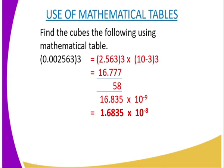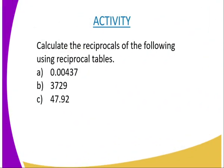And because 10¹, 1 is positive, and there is 10⁻⁹, you add the powers. So positive 1 plus minus 9, you will get negative 8. And therefore, the answer becomes 1.6835 times 10⁻⁸. And that is the overall answer.